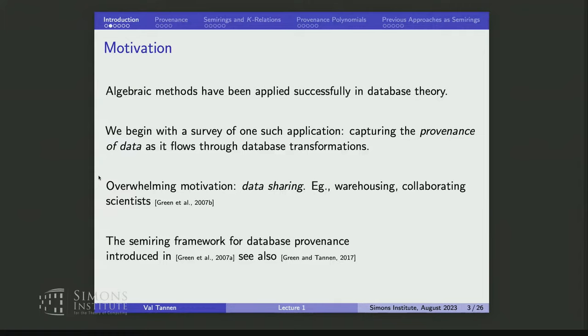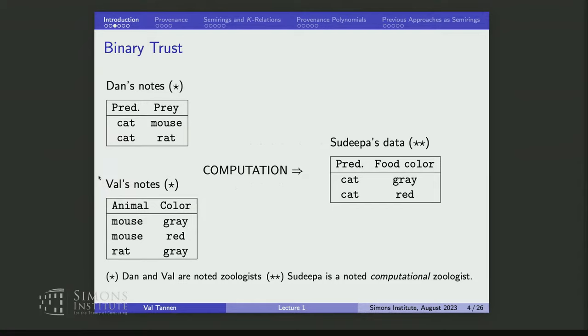And here we are 30 years later, more than 30 years later, and it's still not clear that data integration is a completely satisfactorily solved issue. So data sharing appears in several guises when people build warehouses collecting data from various sources. And a good example that we were very much motivated by is collaborating scientists. So the first project that was done with this was called Orchestra. It was the brainchild of my colleague Zach Ives. And the semiring framework for database provenance was developed in order to support this idea of data sharing,